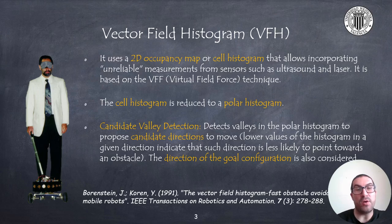The VFH, or vector field histogram technique, assumes that we can build a 2D occupancy map, or a cell histogram, that incorporates unreliable measurements from range sensors such as ultrasound or laser. If not, we can always use raw sensor data. The main idea is to reduce this map to a polar histogram, based on a preliminary idea known as virtual field force.